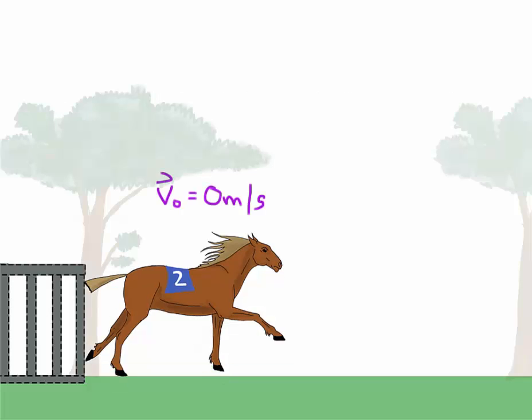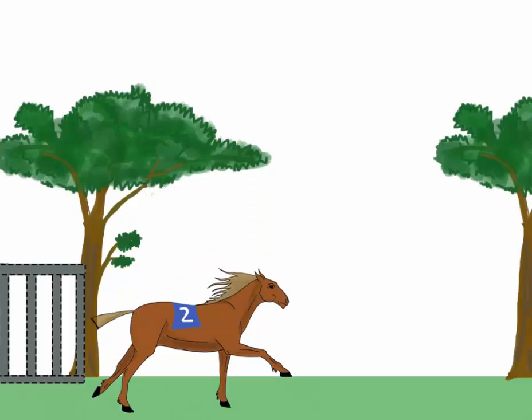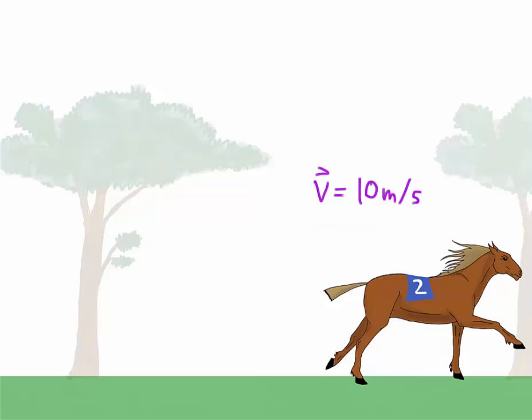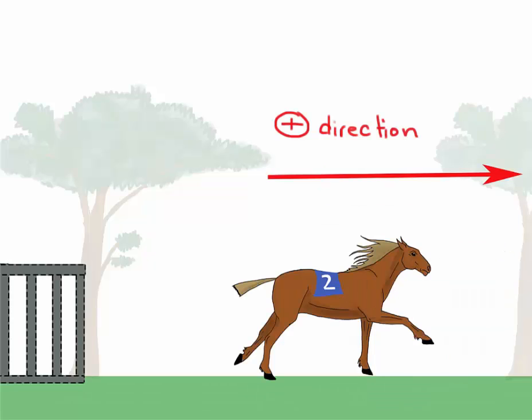The horse starts from rest which means that her initial speed is 0. Then she runs off and accelerates for 6 seconds to a final velocity of 10 meters per second.